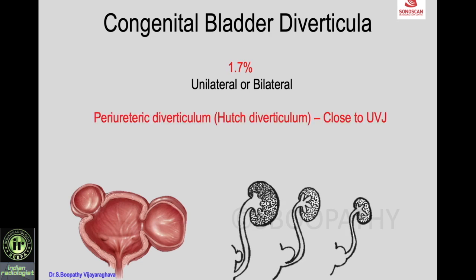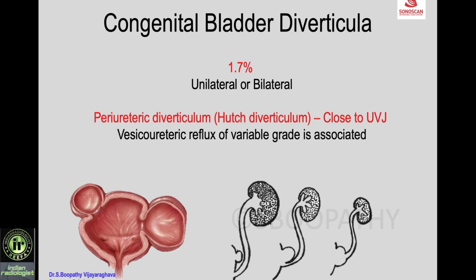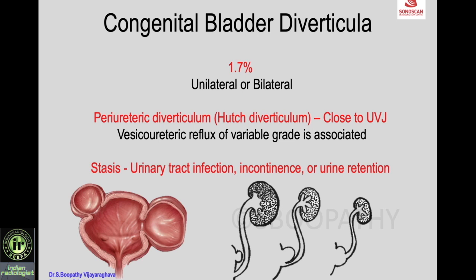A special type is the periureteric diverticulum, or Hutch diverticulum, occurring close to the ureterovesical junction. There are three types based on proximity to the UVJ, including when the ureter opens into the diverticulum. When a periureteric diverticulum is present, vesicoureteric reflux of various grades is associated.